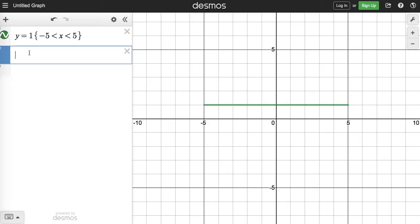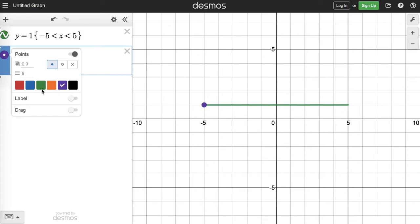To put dots on either side of this line, you need the ordered pairs. For negative 5, I put in negative 5 comma 1, which gives me a dot. To make the dot green like the number line, click and hold on that purple dot and change it to green. We can also change it to an open dot if we want our inequality to be negative 5 is less than x.